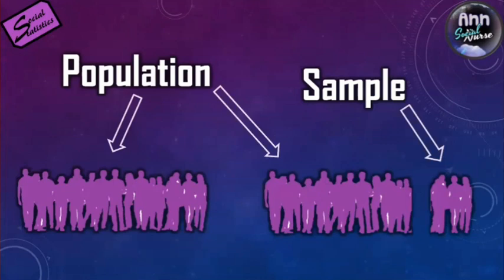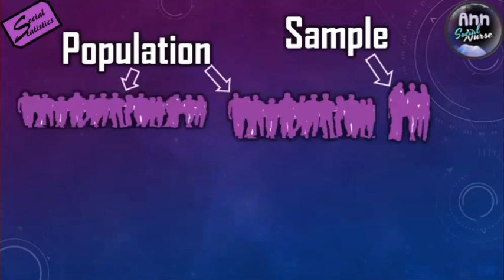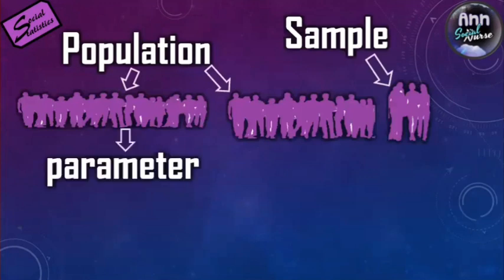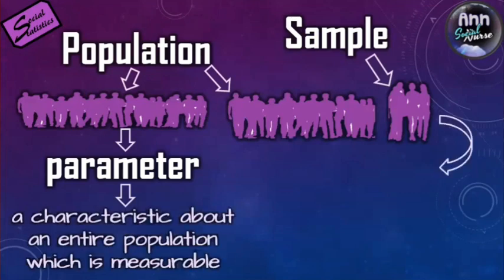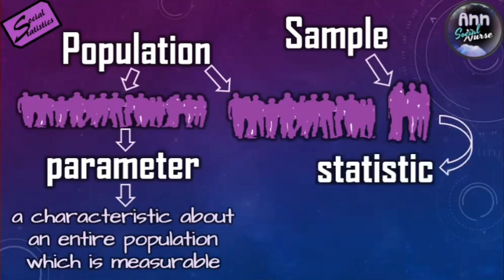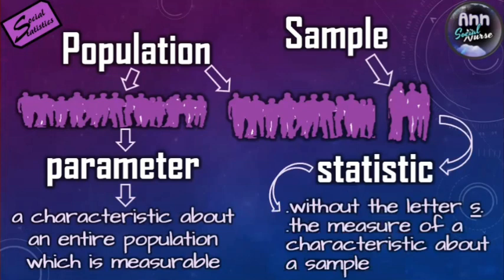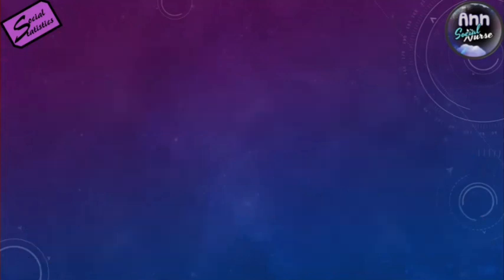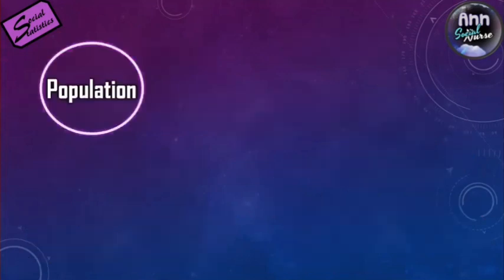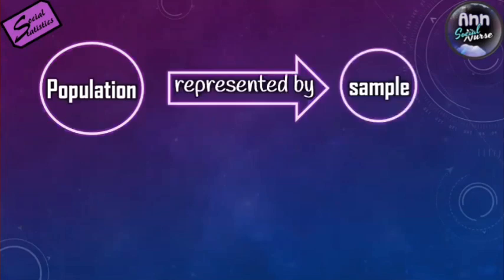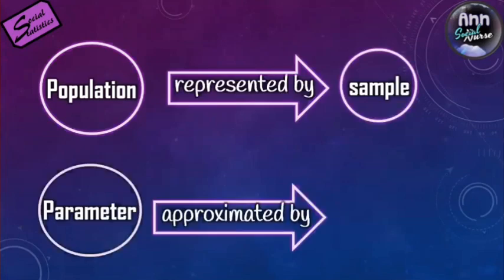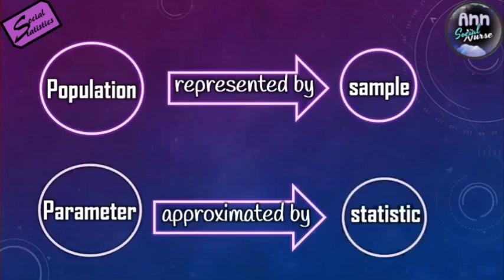We took a fraction of the population — that is what we call a sample. A parameter is the characteristic of a population, whereas a statistic is the term that describes the characteristic of a sample. In short, a population is represented by a sample, whereas a parameter is approximated by a statistic.